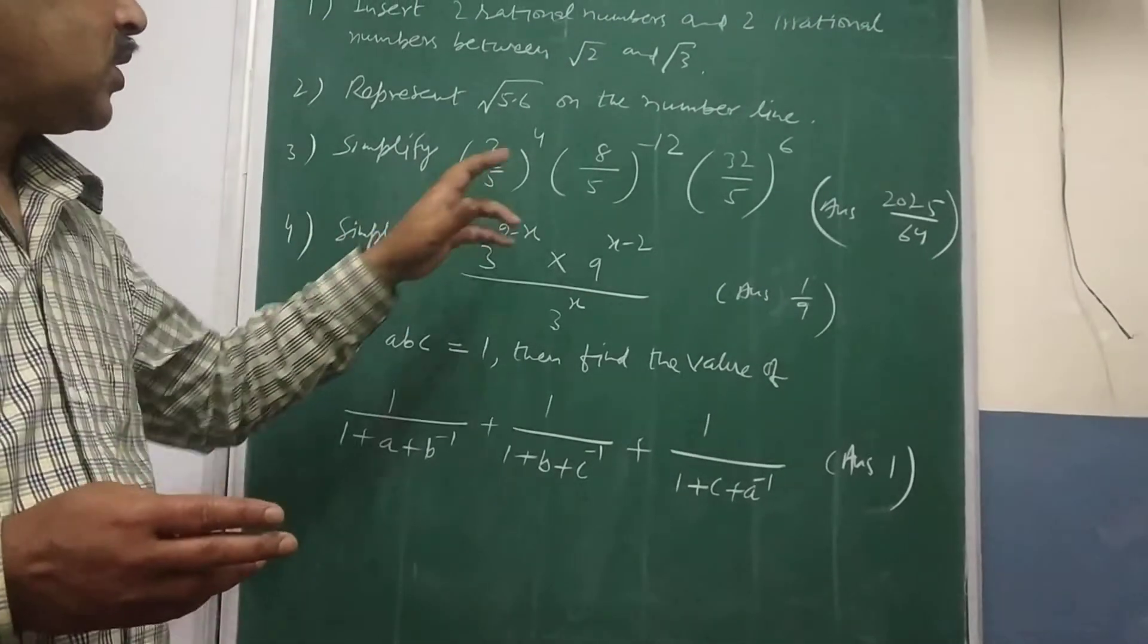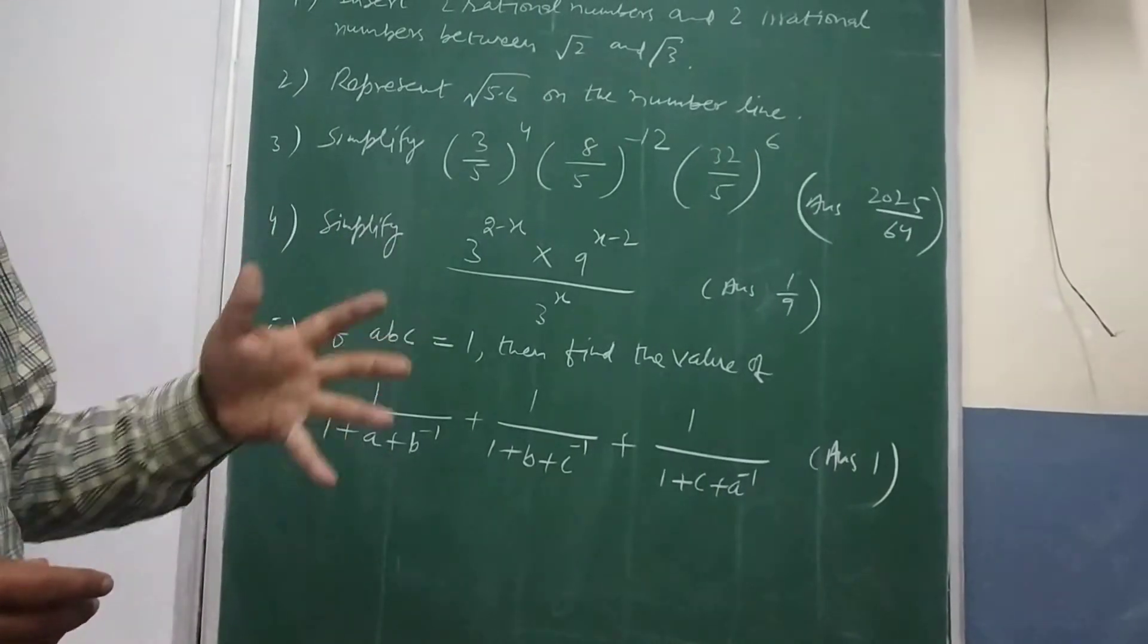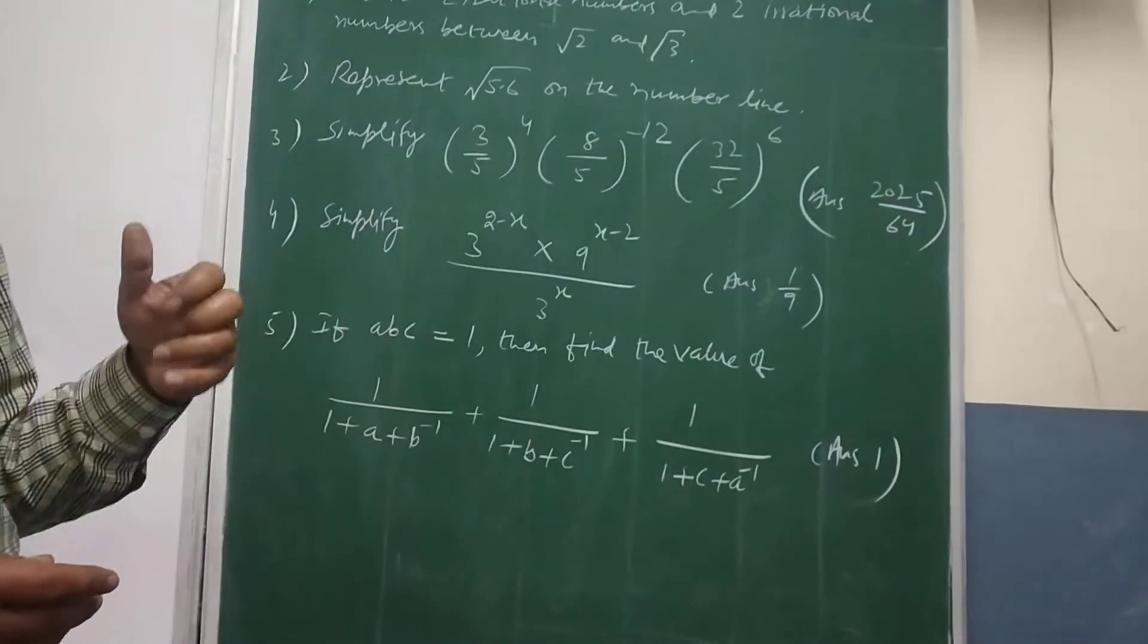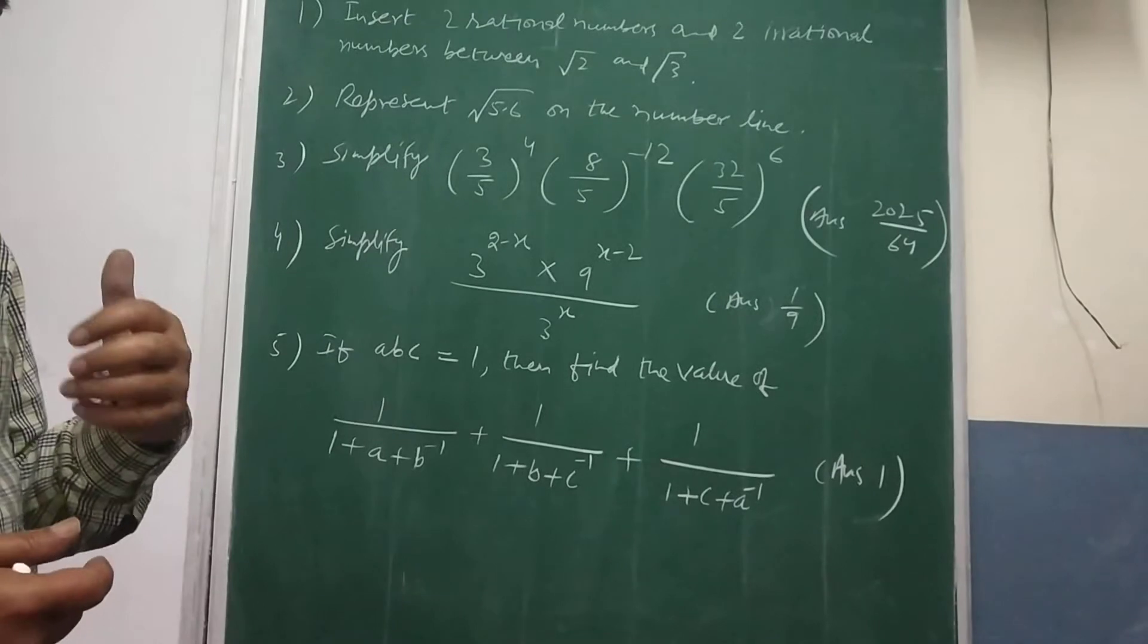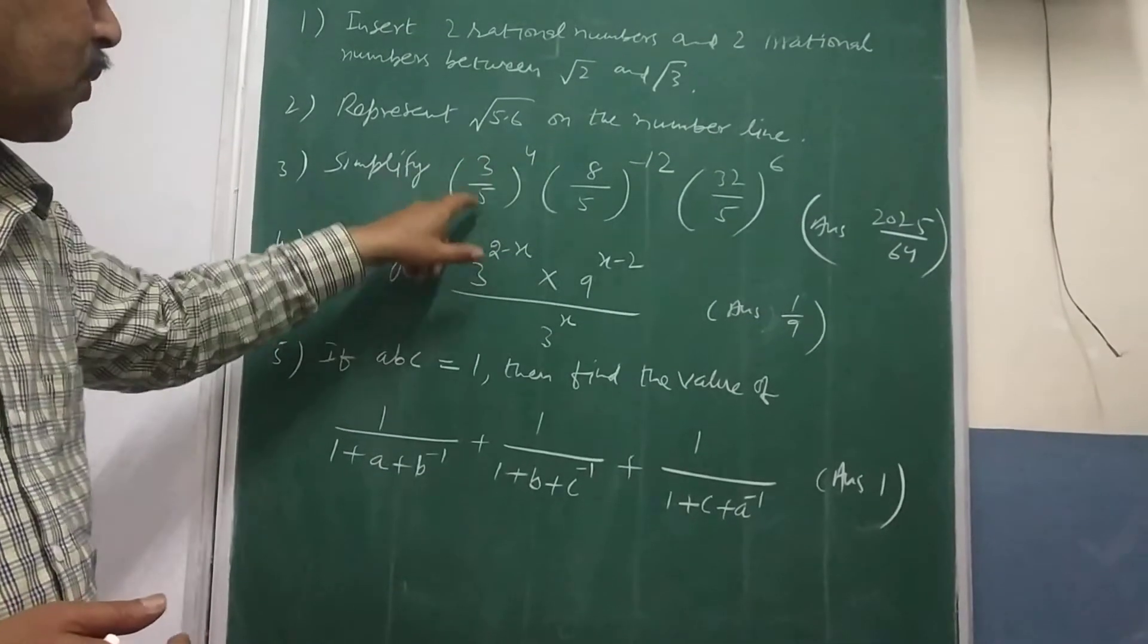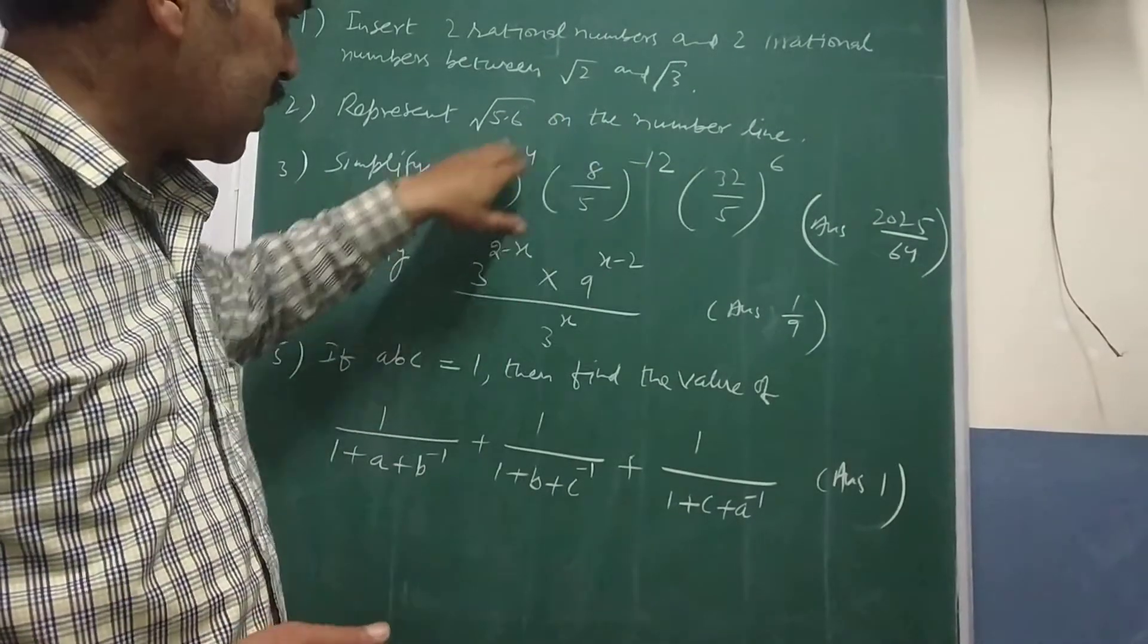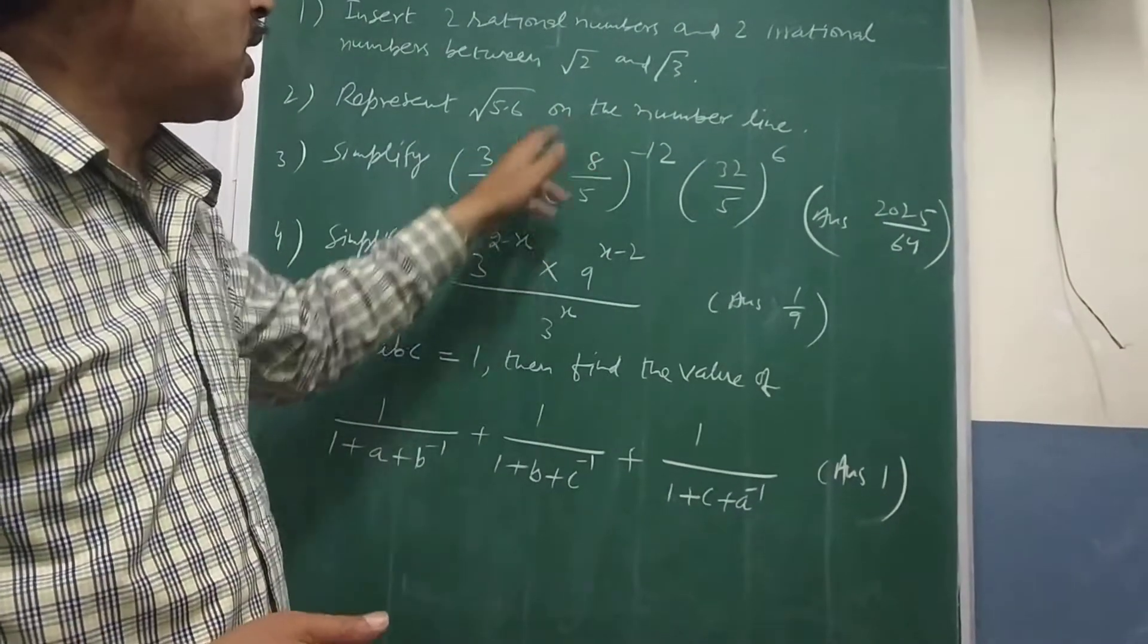So better is like here it is 8, here it is 32. You try to get the prime factors always in case of exponents to apply the law. That will be more convenient way to you. And like 3 raised to the power 4 or 5 raised to the power 4. Here it is 2 raised to the power 3 means you take the reciprocal of this first and then make it positive.